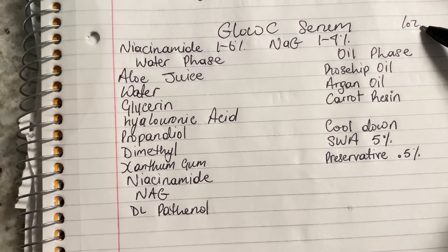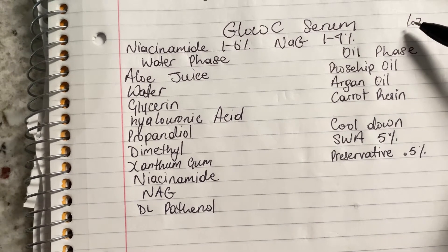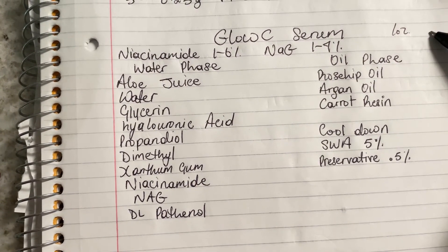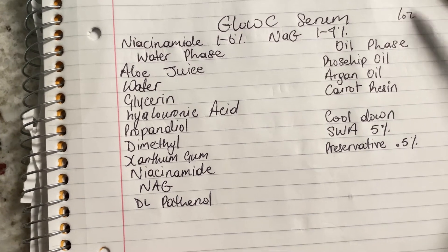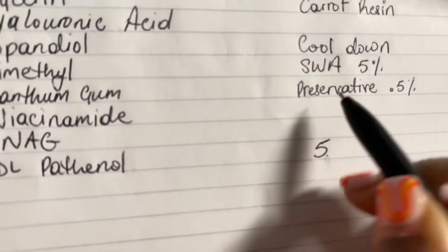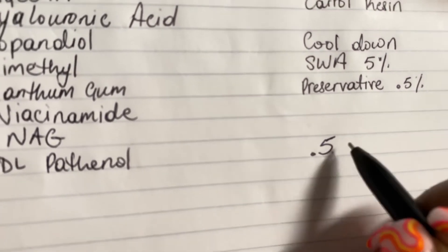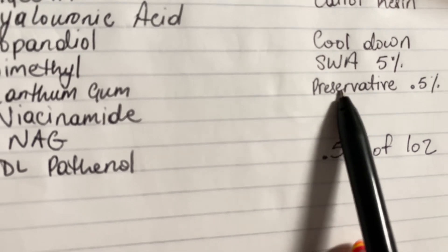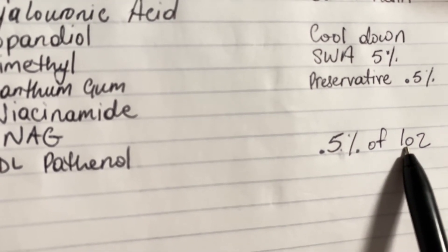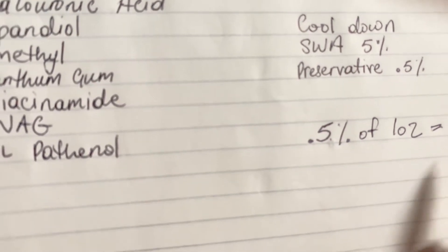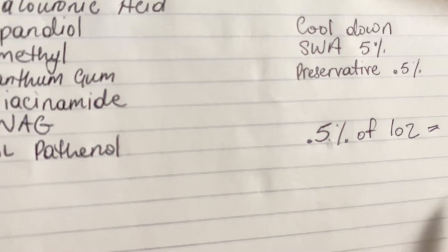First, you want to figure out what is the ounce of the product — is it a one ounce product, a two ounce, a 2.5 ounce? You have to figure that out first. For this product it is a one ounce product. So here is the math: we're going to start with the preservative, which is 0.5 percent of one ounce, because you want to figure out how much preservative you need for the whole bottle. Then you put what it equals — Google is going to be your best friend.